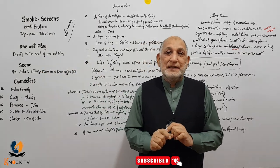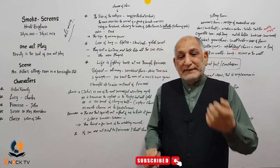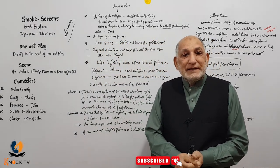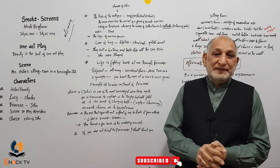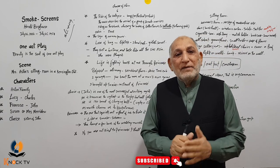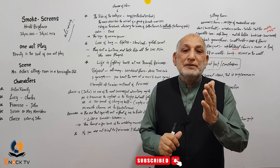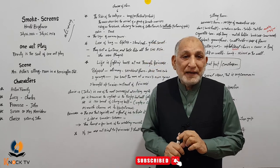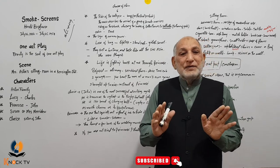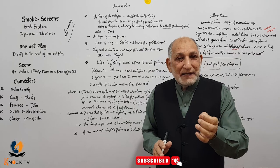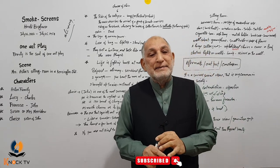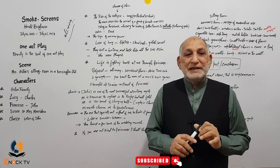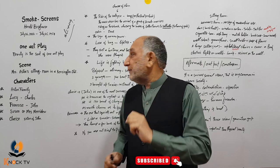اتنے میں گھر کی doorbell بجتی ہے اور ایک لڑکی آتی ہے جس کا نام Clarisse ہے۔ Clarisse آ کر Lucy سے، یعنی Primrose کی والدہ سے، اپنے بھائی کے رشتے کی بات کرتی ہے۔ اس کے بھائی کا نام John ہے۔ وہ بتاتی ہے کہ John ایک کامیاب advertising agent ہے۔